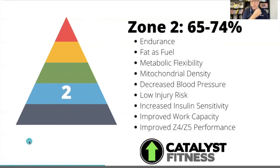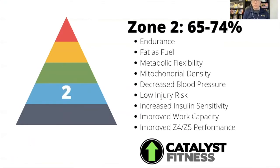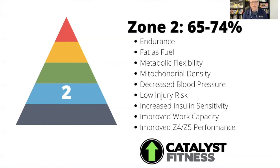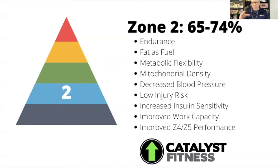Zone two is where things really start to get interesting. Zone two is 65 to 75% of your max heart rate — if your max is 200 that's about 130 beats per minute, but for most people it's around 110. At this stage your heart is beating noticeably and you could have short-sentence conversations. You're primarily burning fat as fuel. You start to sweat, your core temperature comes up, and you're probably doing something like a really easy jog.